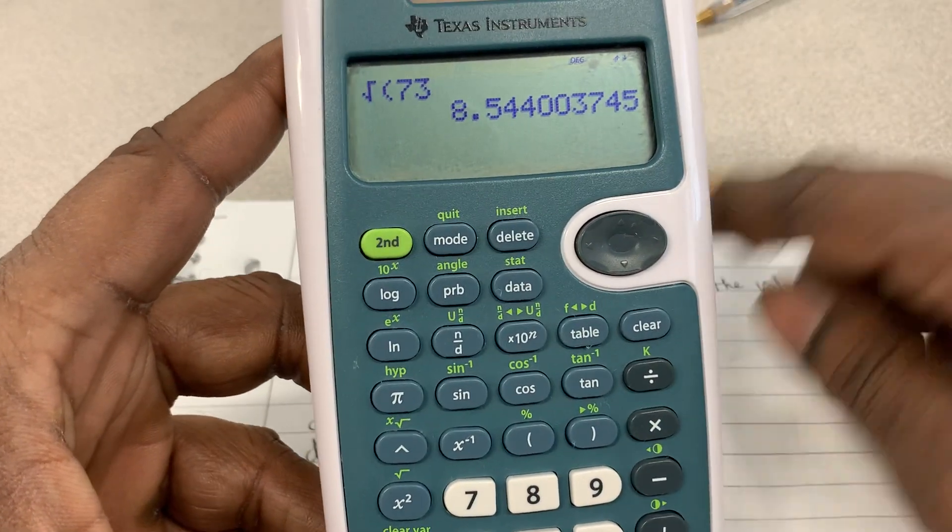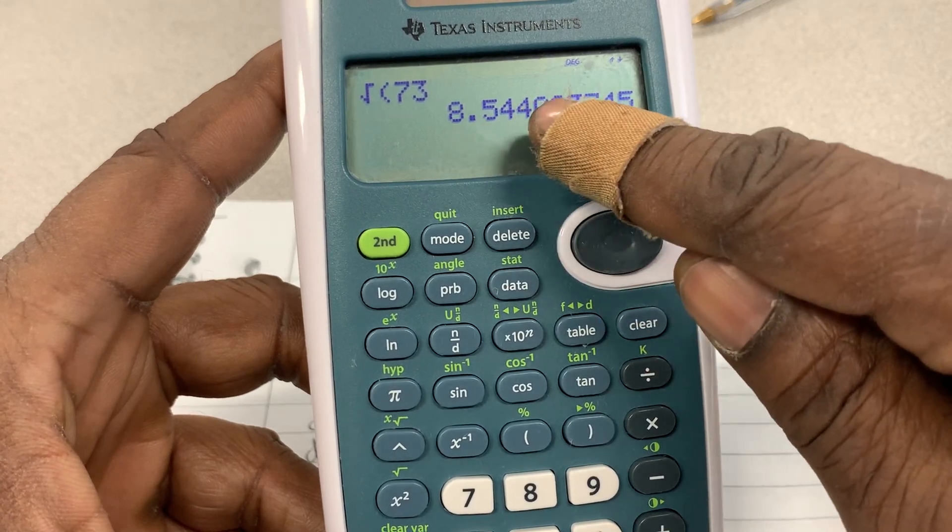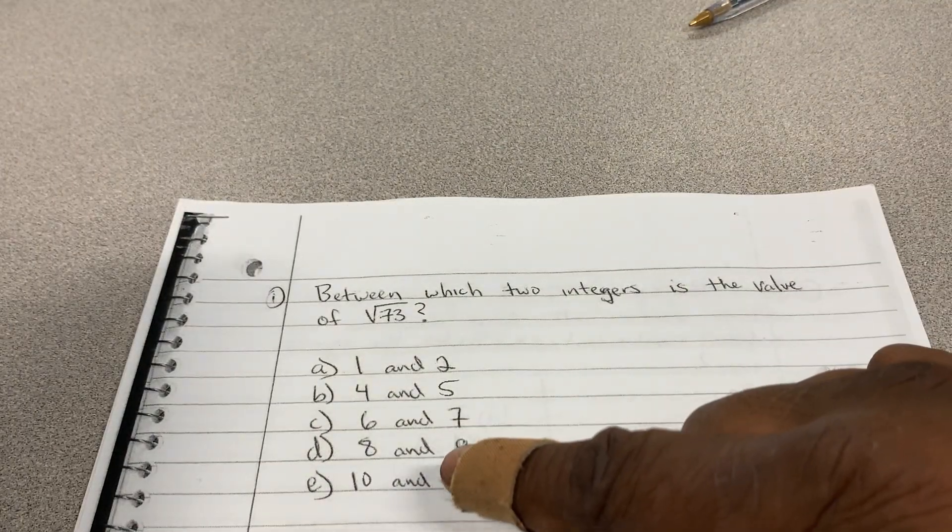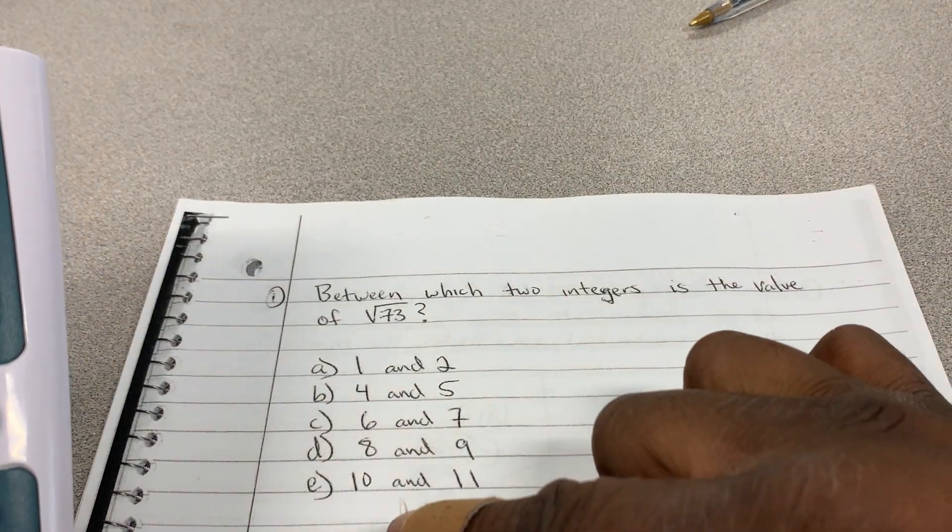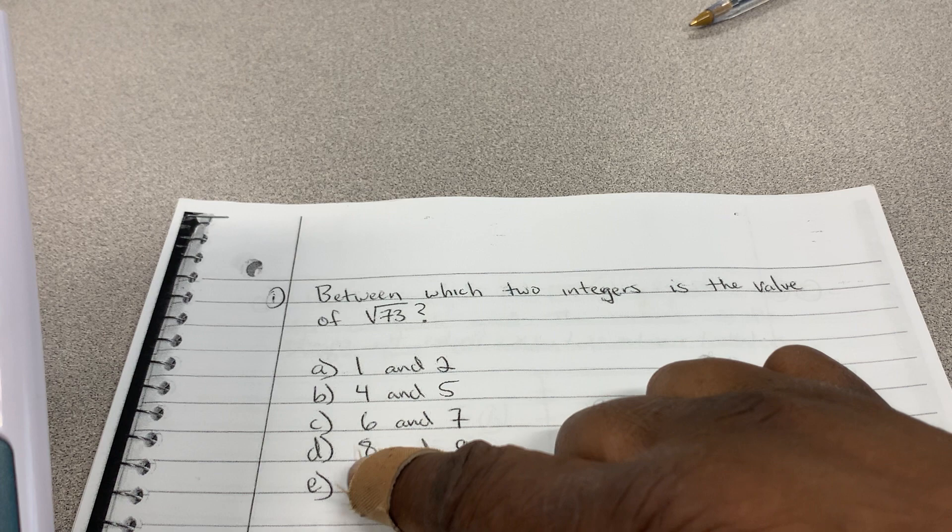look at that, it says 8.544. Now, when I look at my possible answers, where is 8.544 in the middle of? It only makes sense to be in the middle of 8 and 9.